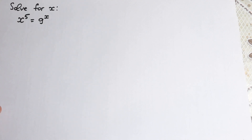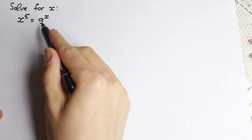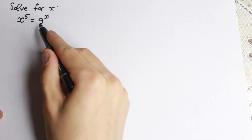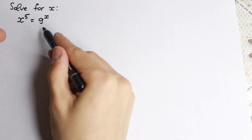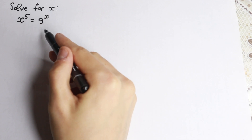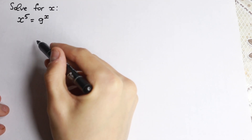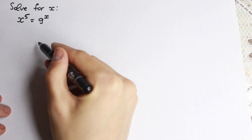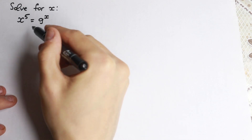Hello everyone! Happy to see you here. Today we have a really interesting exponential equation. We can try to solve it by inspection because we have x to the fifth power equal to 9 to the x, but it's hard to find the root in our head. So we need another approach, and in this video I'm going to show a really good — maybe the best — approach to solve it using the Lambert W function. Let's solve it step by step.